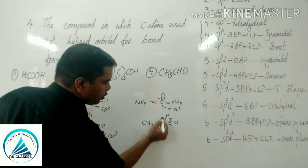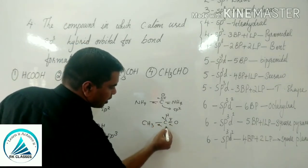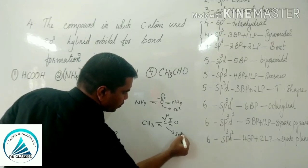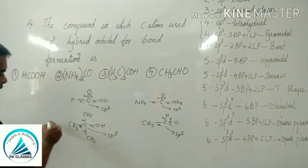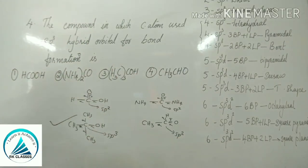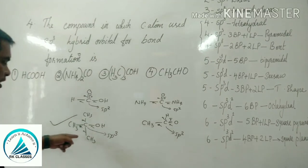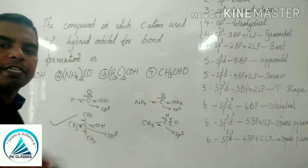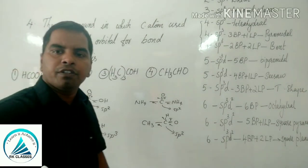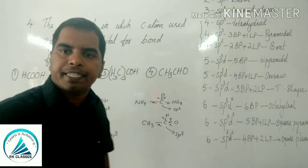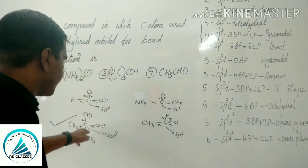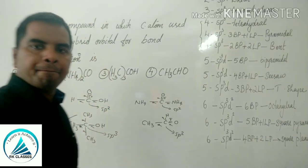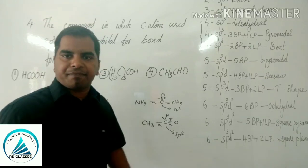Around the carbon in the sp3 compound, we have 4 bond pairs — 4 sigma bonds. So the hybridization of this compound is sp3.